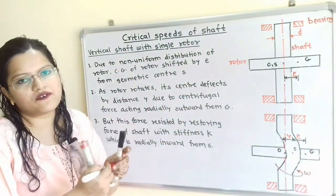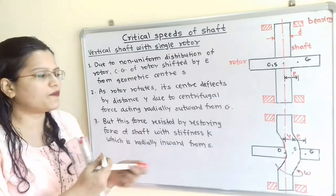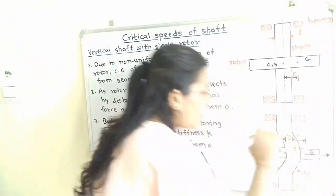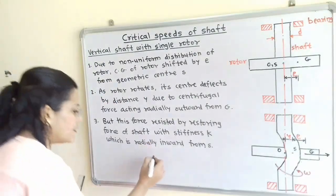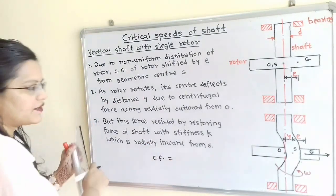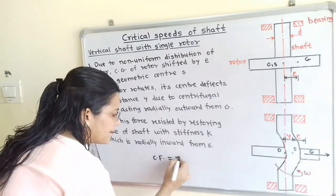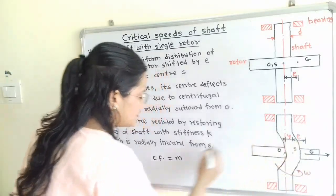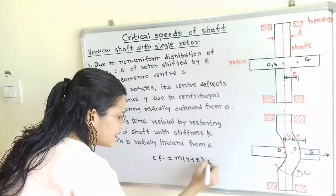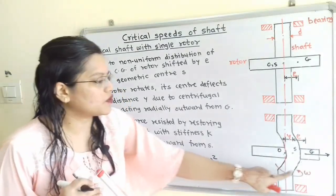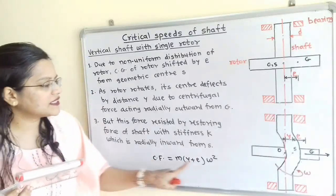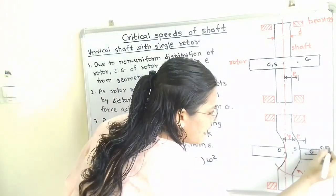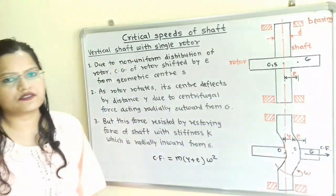The centrifugal force passes through point G in the radially outward direction. The centrifugal force is equal to M times (Y plus E) times omega squared, where M is the mass of the rotor, (Y + E) is the total distance between the center line and point G, and omega is the angular velocity.